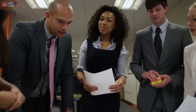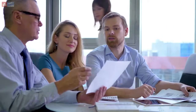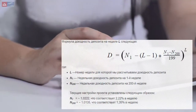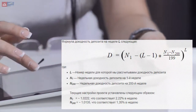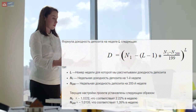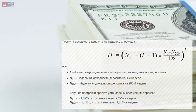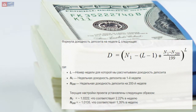Расчет чистого капитала: для того чтобы рассчитать чистый капитал одной выплаты, необходимо знать, как определяется доходность депозита. Для расчета чистого капитала мы используем формулу и не используем доходность, которую можно видеть в графике выплат, так как доходность депозита в графике выплат иногда скорректирована вручную. Формула доходности депозита на неделе: L — номер недели, для которой рассчитывается доходность; N1 — недельная доходность депозита на первой неделе; N200 — недельная доходность депозита на двухсотой неделе.